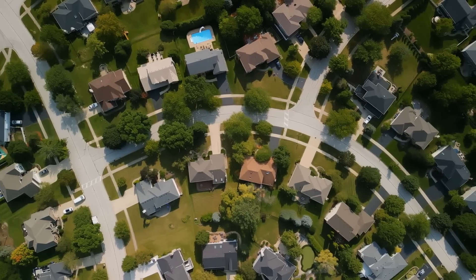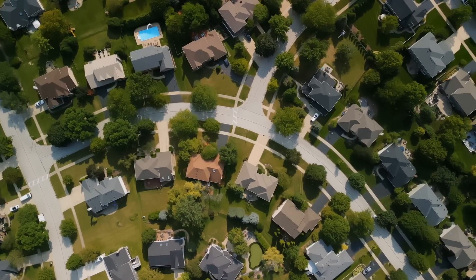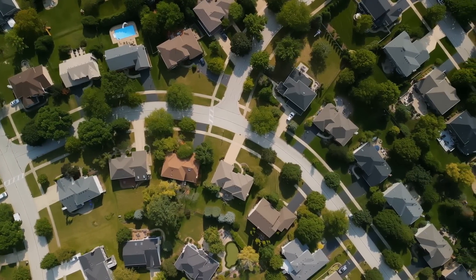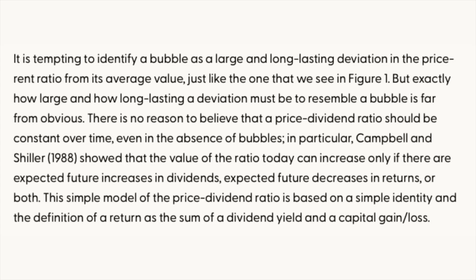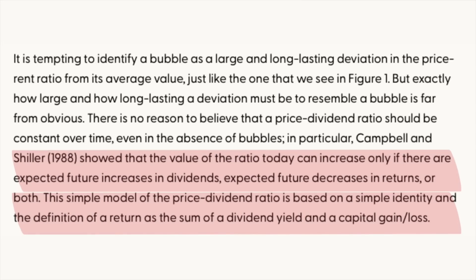There is, of course, the other side to this story. The same 2004 Fed paper acknowledges that the economists aren't entirely sure this ratio is a reliable tool for identifying a bubble. The authors explain that while it's tempting to call a bubble when the price-to-rent ratio stays above its usual level for a long time, figuring out how big and how long these changes need to be to actually call it a bubble isn't clear-cut. The ratio doesn't always stay the same even when there's no bubble — economists Campbell and Schiller wrote in 1988 that the ratio might rise if people expect rents to increase, or expected returns to decrease, or both.